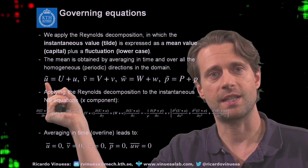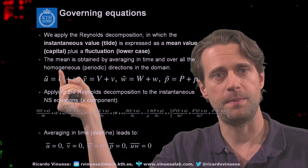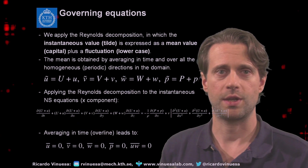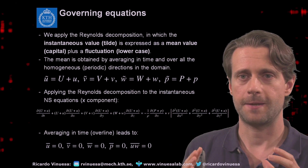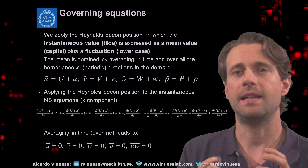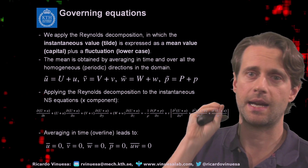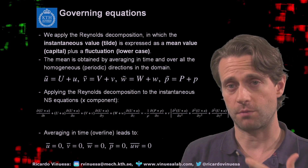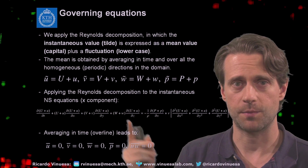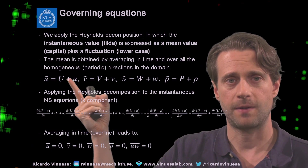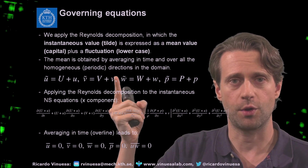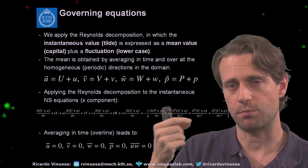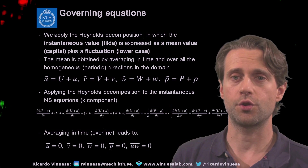What we can do is take a velocity signal. If u is the velocity, we can take the instantaneous signal and express it as a mean value — capital U — plus a fluctuation. So essentially, when we are applying Reynolds decomposition, the instantaneous signal is going to be a mean plus a fluctuation about that mean. That Reynolds decomposition can be applicable to all the variables in our problem.